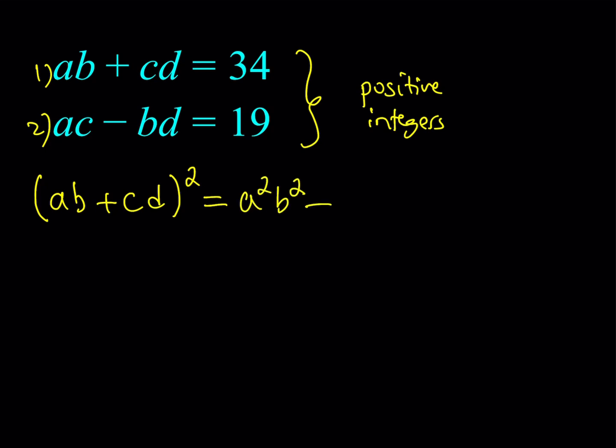So if I square this expression, I get A²B² plus 2ABCD plus C²D². And obviously, if you square 34, you should be getting 1156.